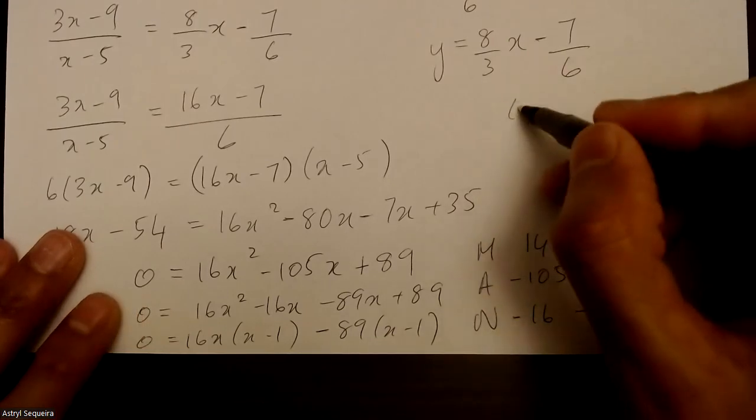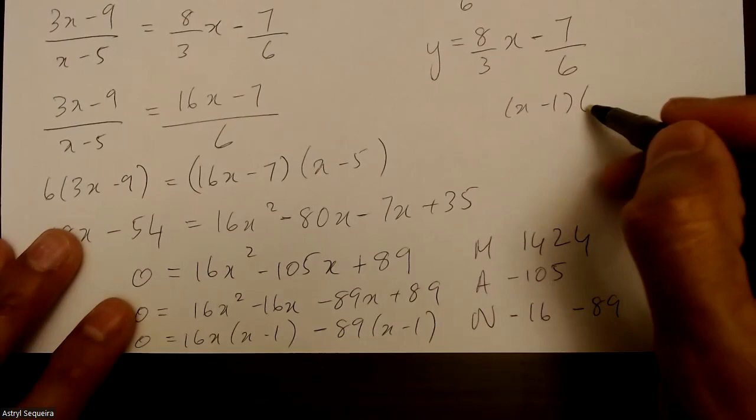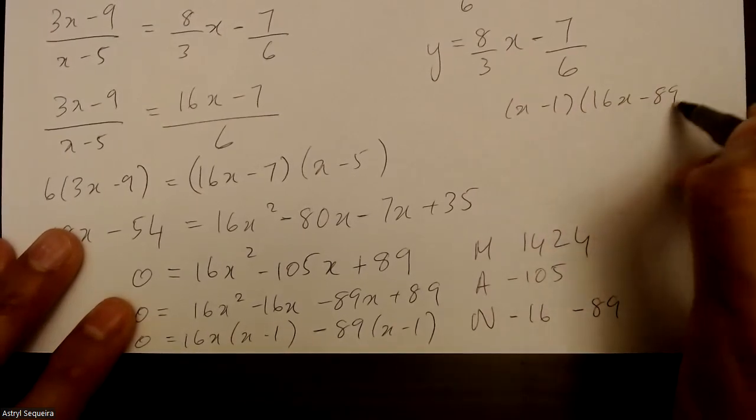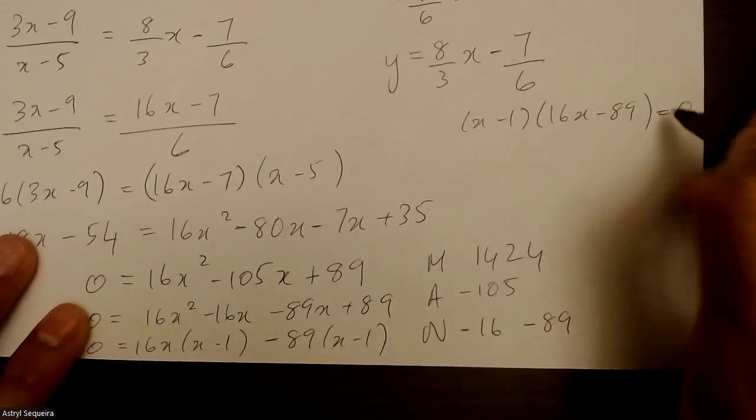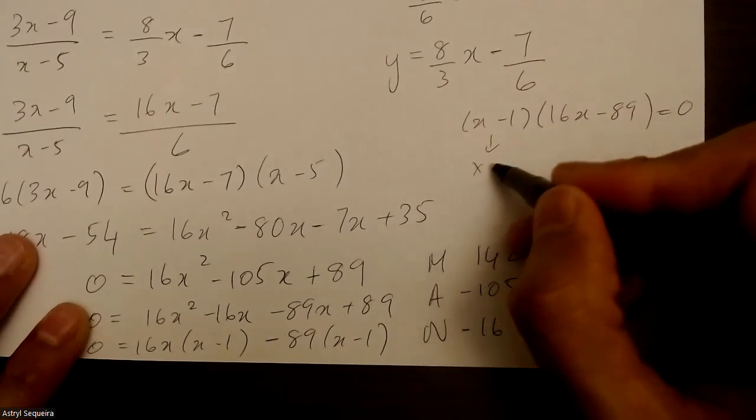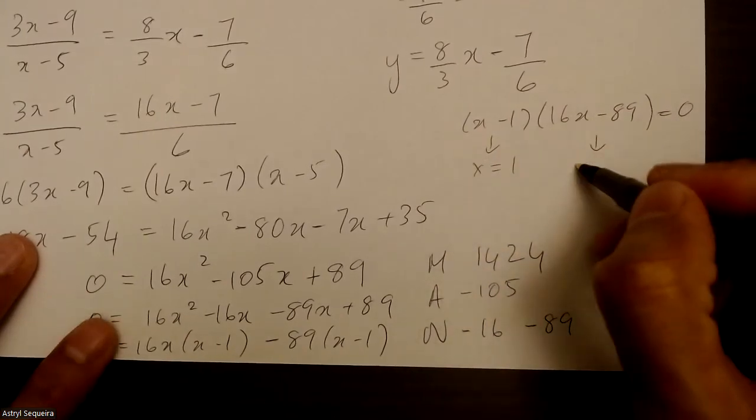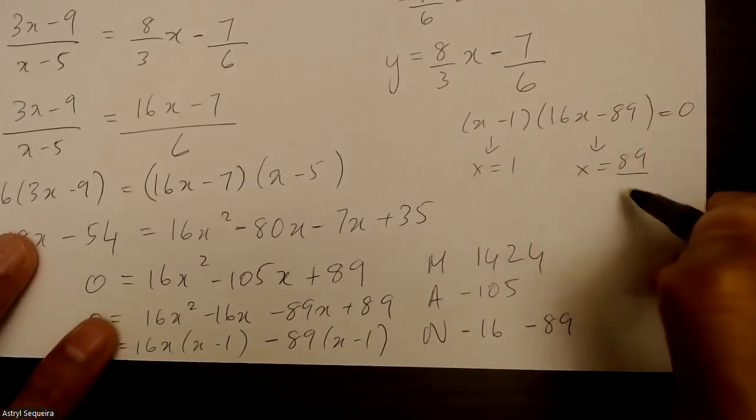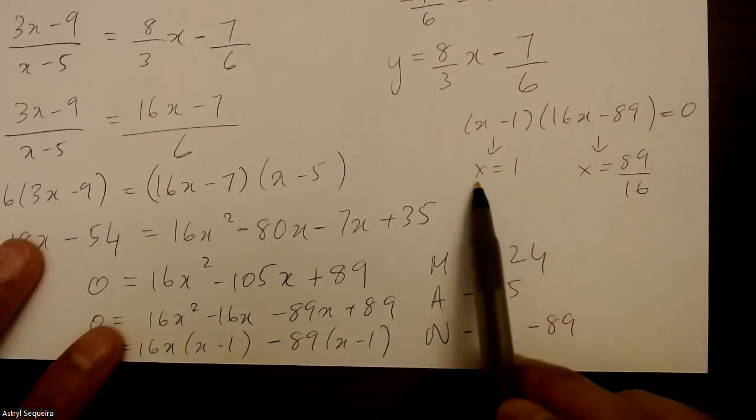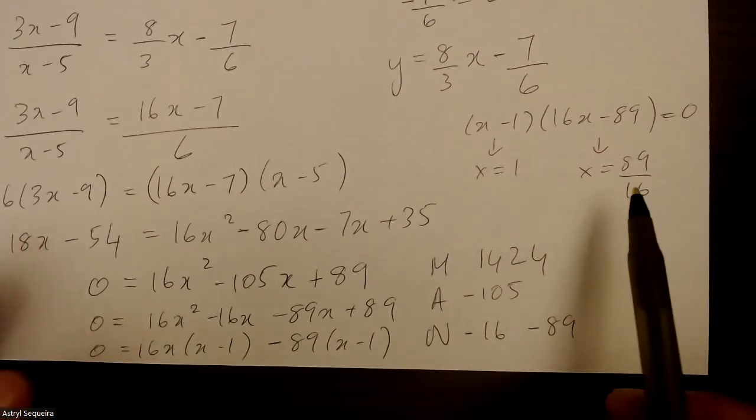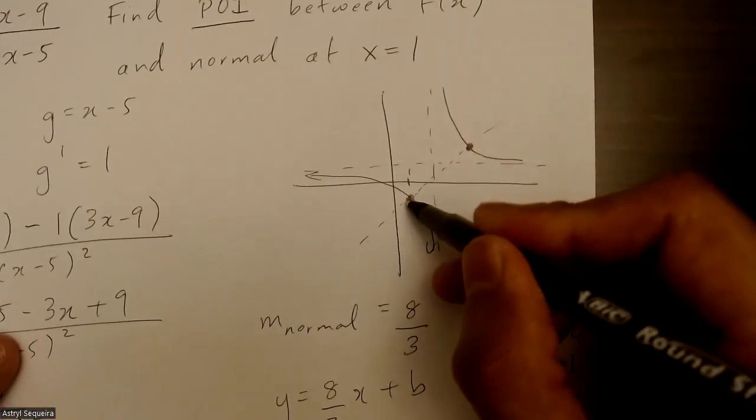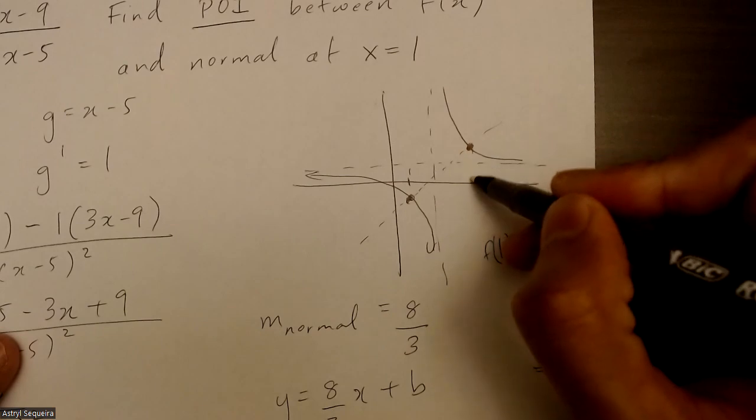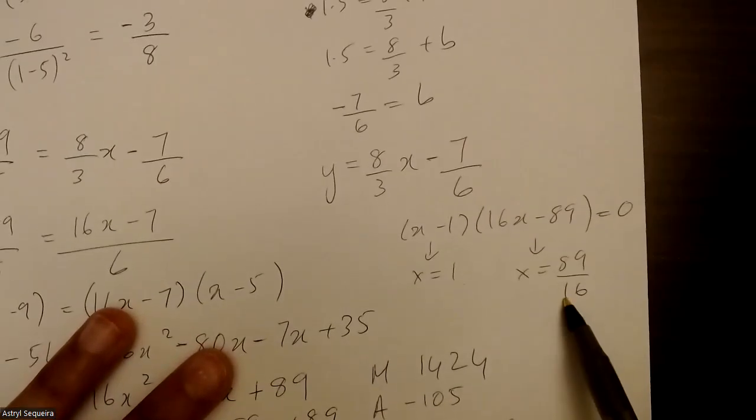So I have x minus 1 times 16x minus 89 equals 0. So your solutions, x equals to 1, x equals to 89 over 16. Now you know that if you've got x equals to 1, your solution is like 99% correct, because that is one of the points of intersection that the question gave. Which means that the x value here is the other point that we found, which is 89 over 16.